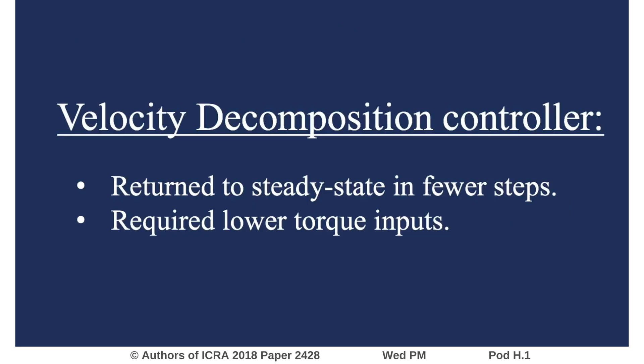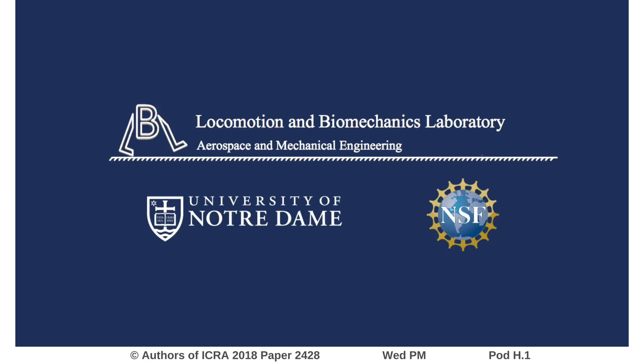In conclusion, the new control method improved disturbance rejection performance in both simulation and an experiment. This new controller also resulted in smaller average and peak stance knee torques.